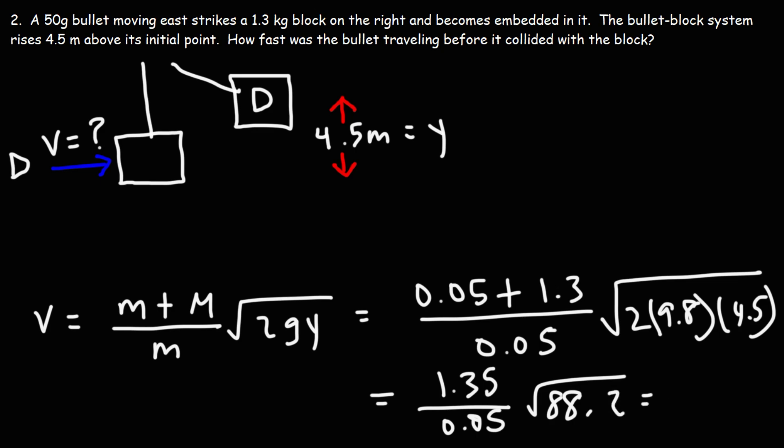So once you plug in everything, you should get this answer: the initial speed is 253.57 meters per second. So that's a quick and simple way that you could use to calculate the initial speed of the bullet for the ballistic pendulum problem.